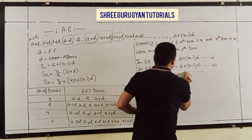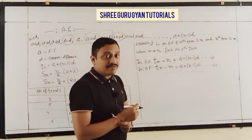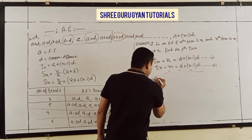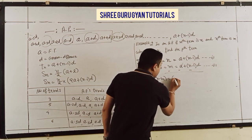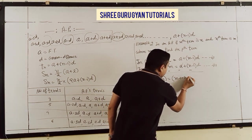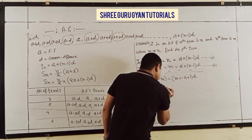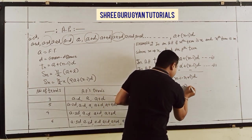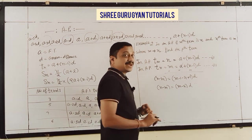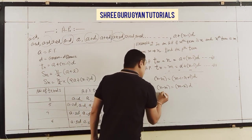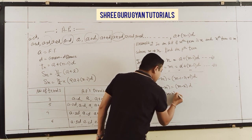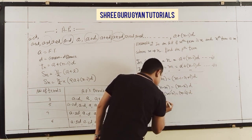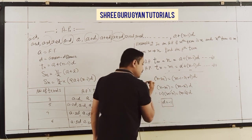Subtracting equation 2 from equation 1: (M-1)D - (N-1)D = N - M, which gives (M-N)D = N-M = -(M-N). Taking minus common: D = -1.